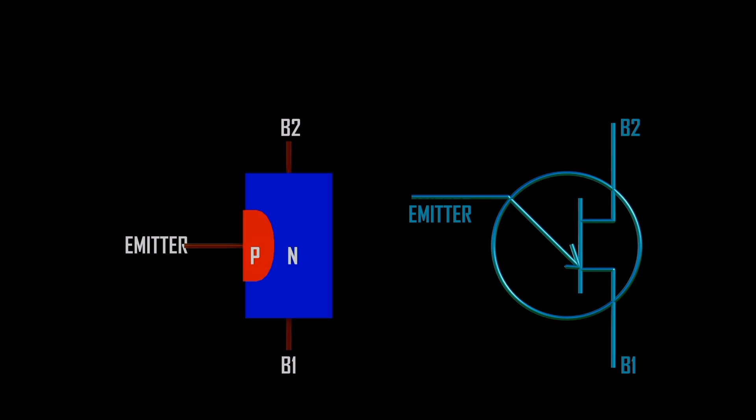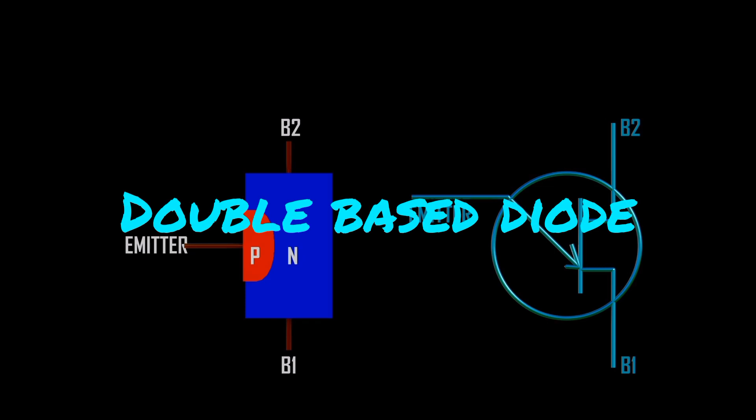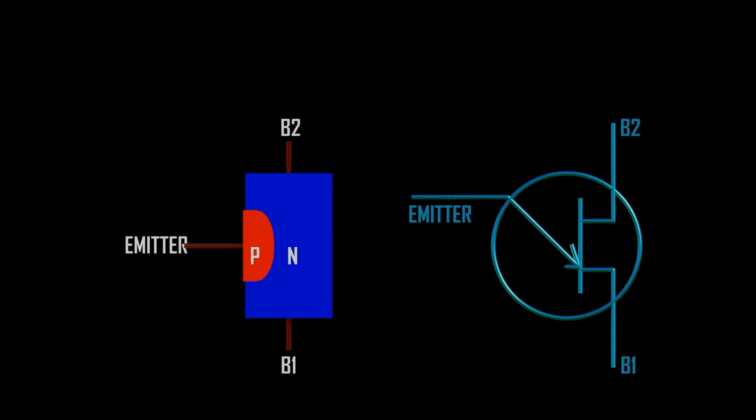The device has only one P-N junction, so it forms a diode. Because the two base leads are taken from a section of the diode, the device is also called a double base diode. The emitter is heavily doped while the n-type is lightly doped. Thus, the resistance between the base terminals is very high when the emitter terminal is open.